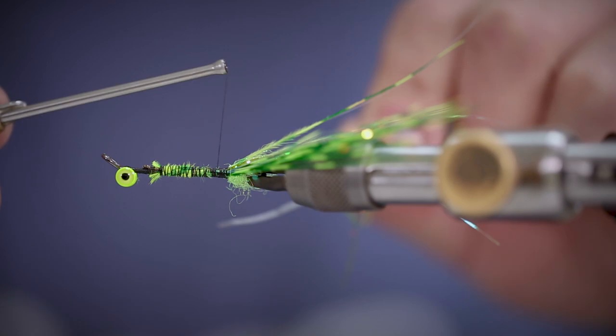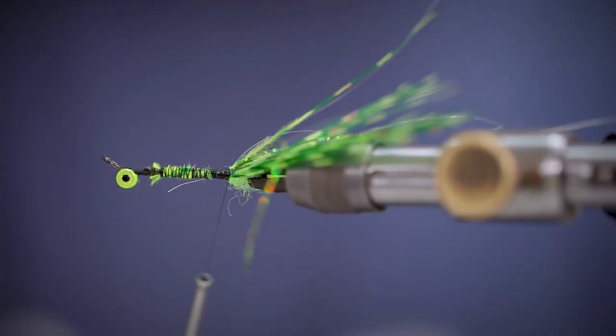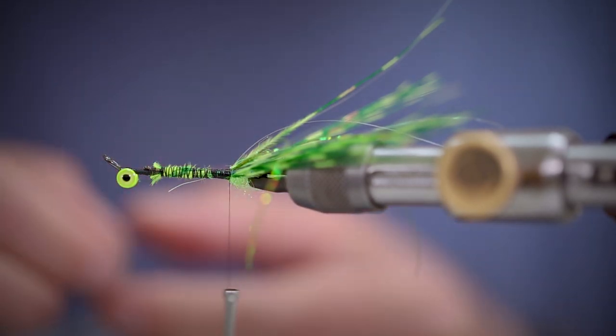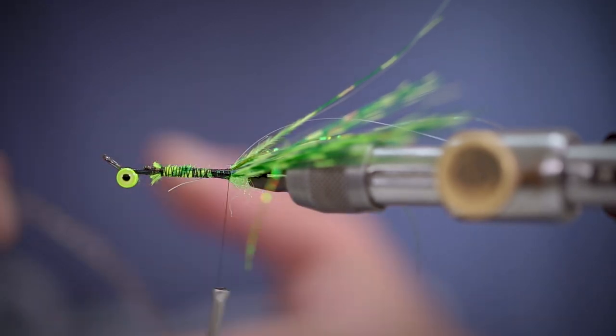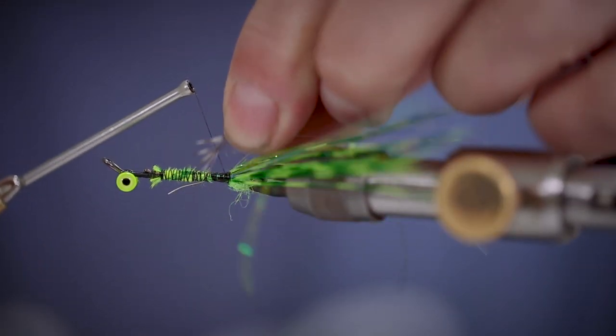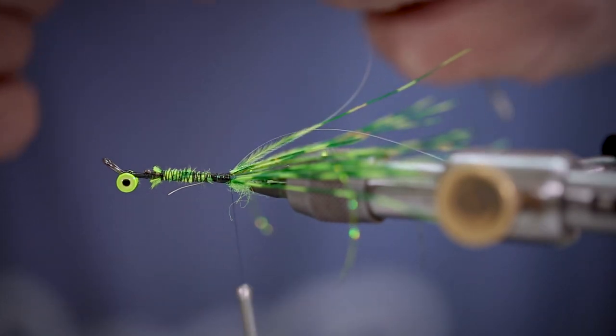Next, we're going to tie in some oval tinsel that's going to act as the ribbing for the body. Now we're going to add in a long natural grizzle hackle with the same barb length all the way along, that's going to create a nice even body.